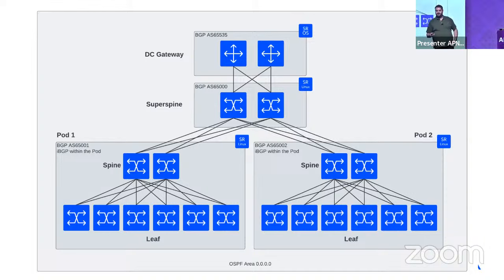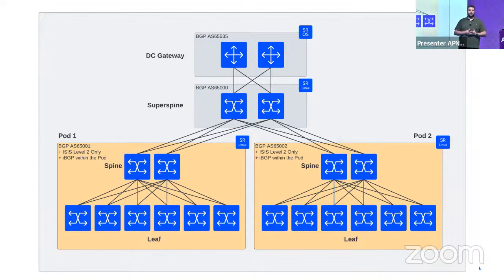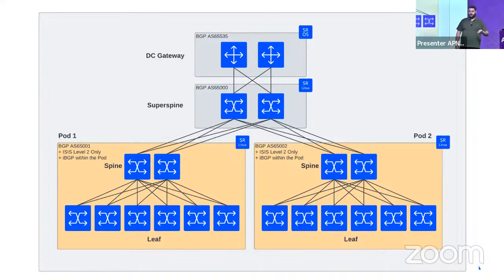The change to be tested: global OSPF across the whole data center is not ideal. The plan is to flip pods over to use individual ISIS instances for loopback reachability within pods, using iBGP over ISIS instead, then remove global OSPF. Only the pods will be changed. The demo video is played.